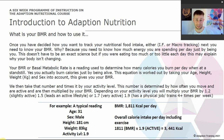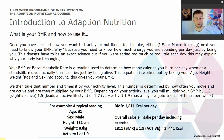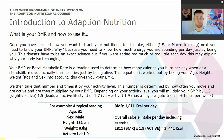That's what he burns just by sitting still. His overall calorie intake per day, including his exercise, is his BMR times his activity rate of 1.9 — so 1,811 times 1.9 — which gives an overall reading of 3,441 calories. That is how many calories that individual male would be consuming per day.